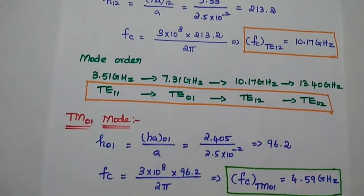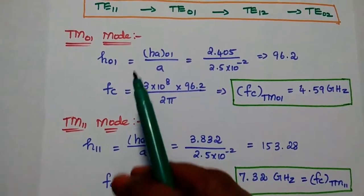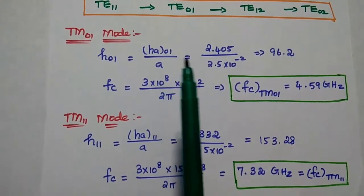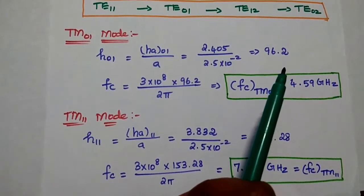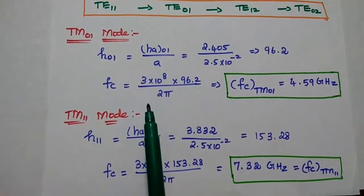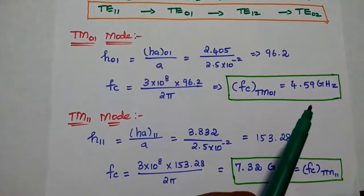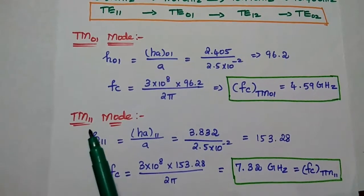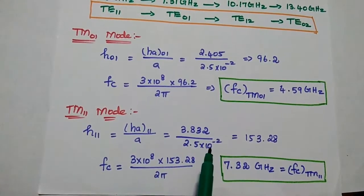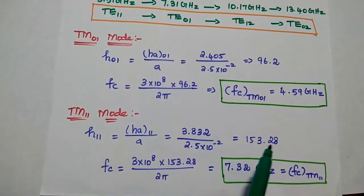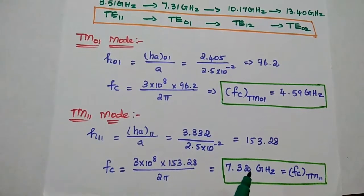The same way, we can find out the values for TM waves. For TM01 mode, H'_01 for TM is 2.405. Substituting that value, H01 = 96.2. Substituting this in the cutoff frequency formula, the cutoff frequency for TM01 is 4.59 GHz. For TM11 mode, H'_11 = 3.832 / (2.5 × 10⁻²) = 153.28. Substituting this H11 value, the cutoff frequency is 7.32 GHz.